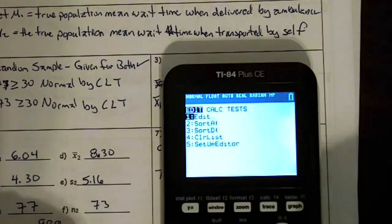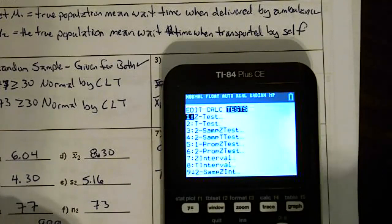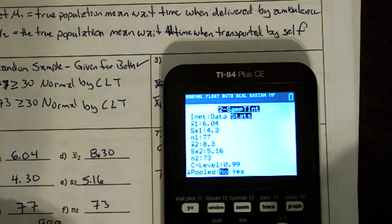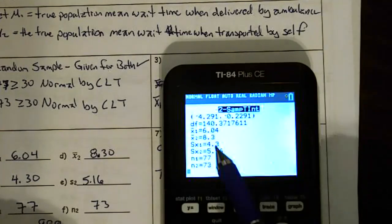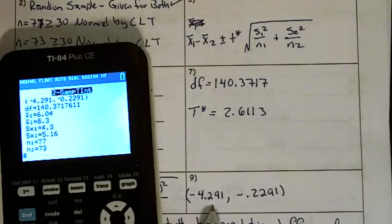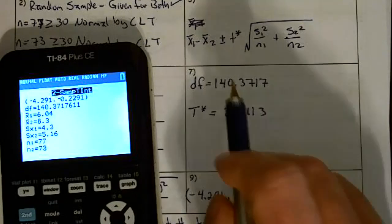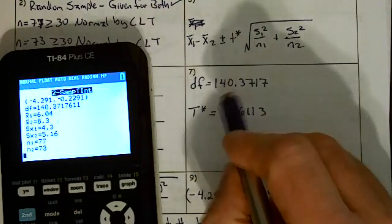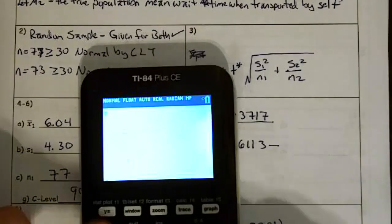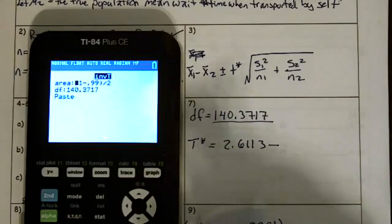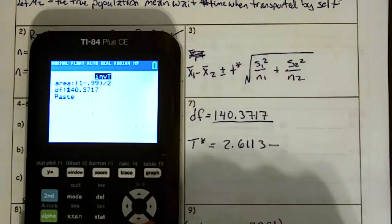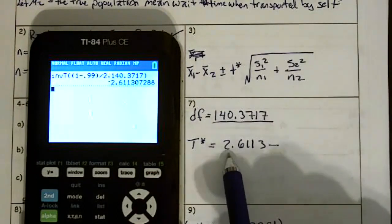I obviously have a typo somewhere, so let me go back into that. Stat test. Zero. 6.04. There we go. That's looking a little much better. And so we have our interval, and we can write that down on number nine right now, negative 4.291 and negative 0.2291. The other thing I need to notice is I need my degrees of freedom, which it gives me right here, 140.3717. And with that, I can now get my T star. So to get my T star, second vars, inverse T, one minus 0.99 divided by two, degrees of freedom. There's that 140.3717 I needed. And I get a T star of 2.6113.